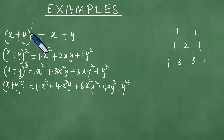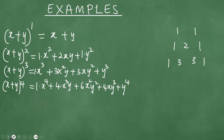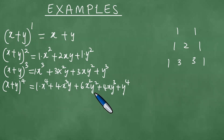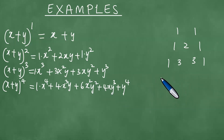Notice that to the power 1 you have 2 terms, to the power 2 you have 3 terms, to the power 3 you have 4 terms, and to the power 4 you have 5 terms. So the number of terms is always 1 more than the power. The coefficients for the fourth power are 1, 4, 6, 4, 1.